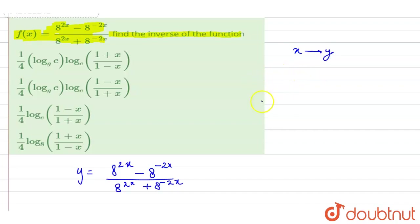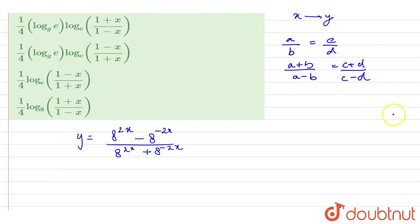Now in this, we are going to apply componendo and dividendo. Now, what is componendo and dividendo? Let's say we have a by b is equal to c by d. So we can write this as a plus b upon a minus b is equal to c plus d upon c minus d. So this is componendo and dividendo. So we are going to apply it here in this question.